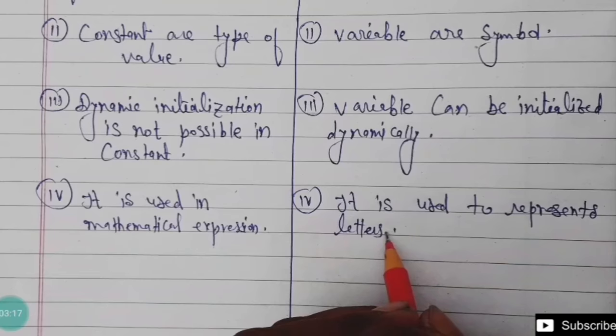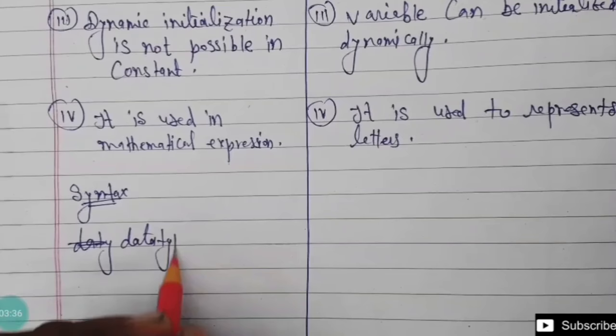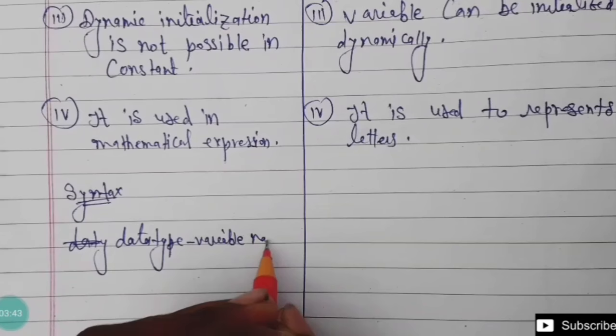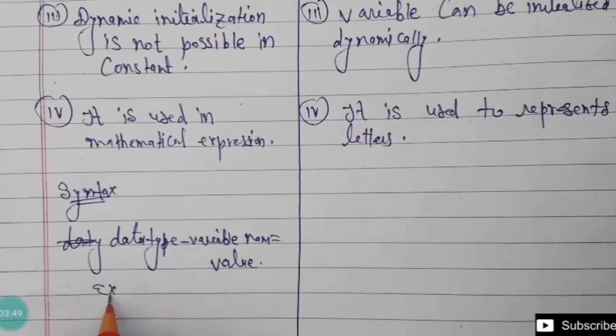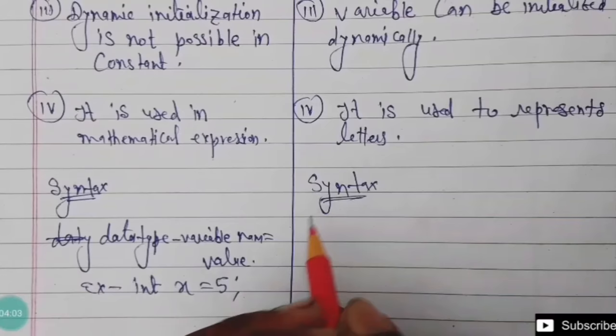Now we write the syntax. The syntax of a constant in a programming language is: data type, variable name, equals to, value. For example: int x = 5. This is the syntax of a constant.